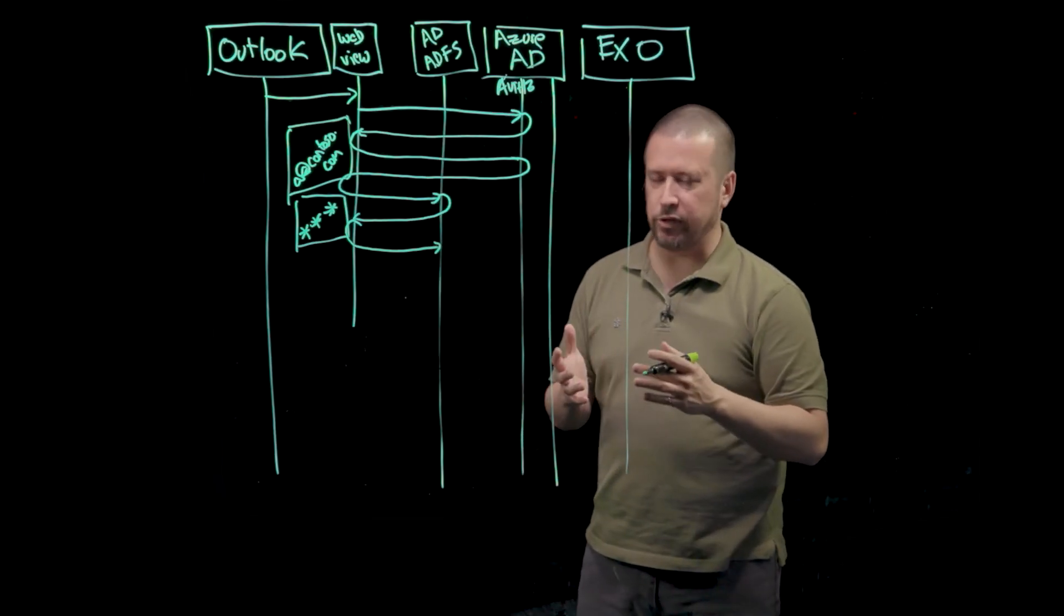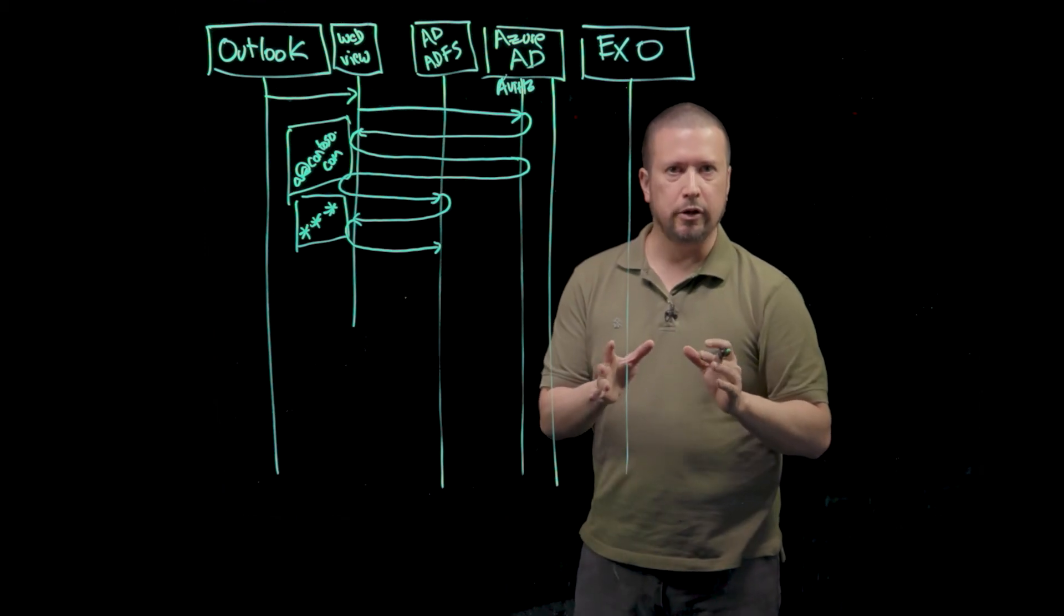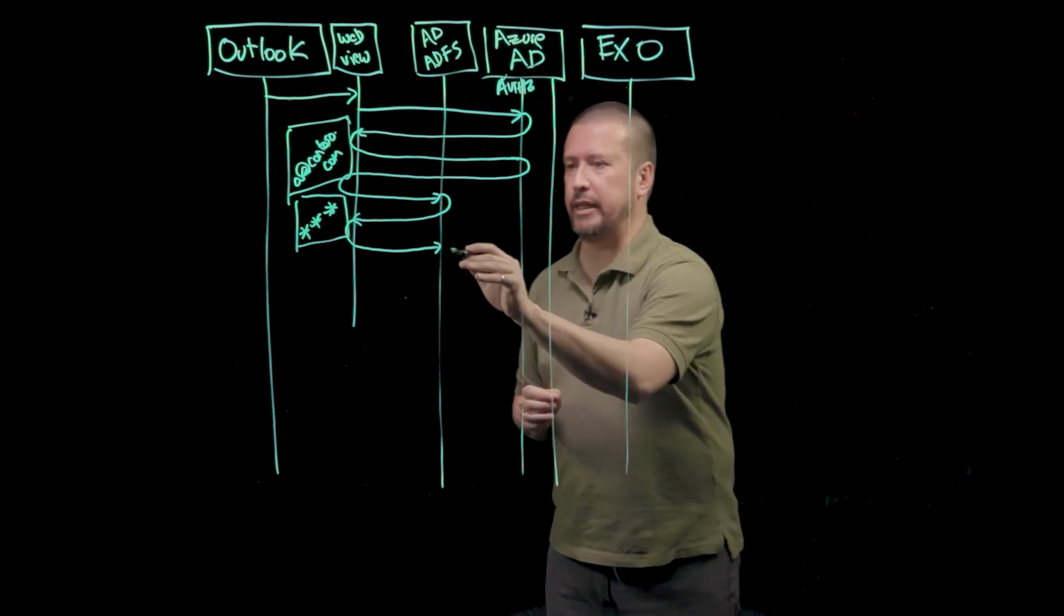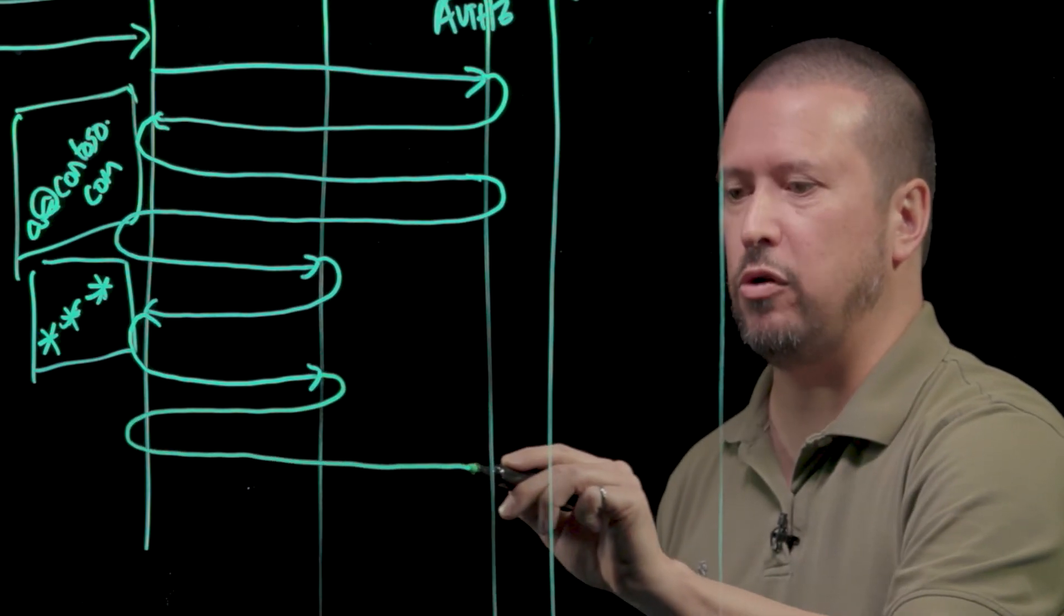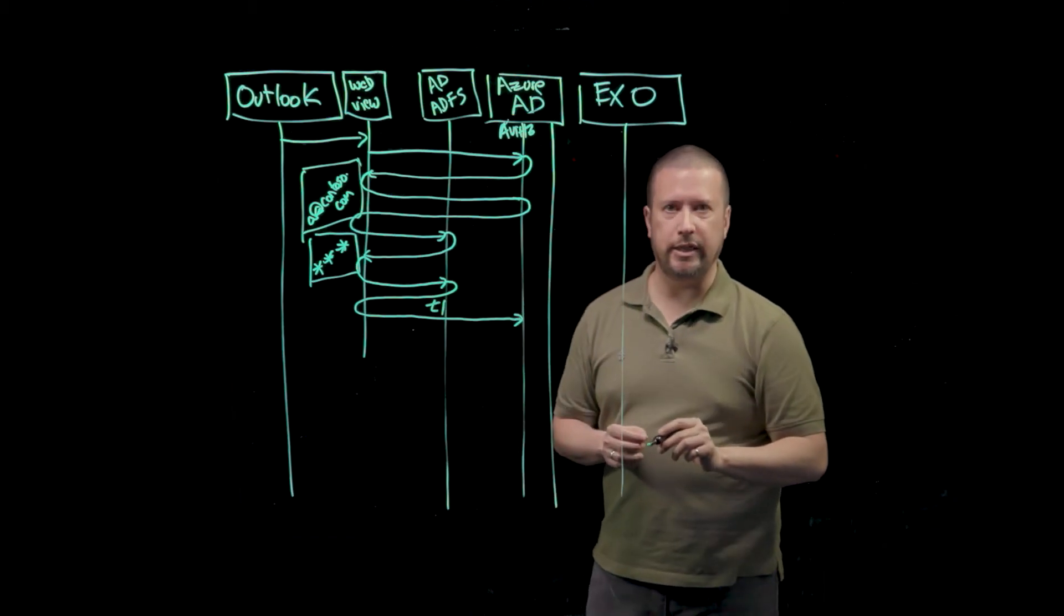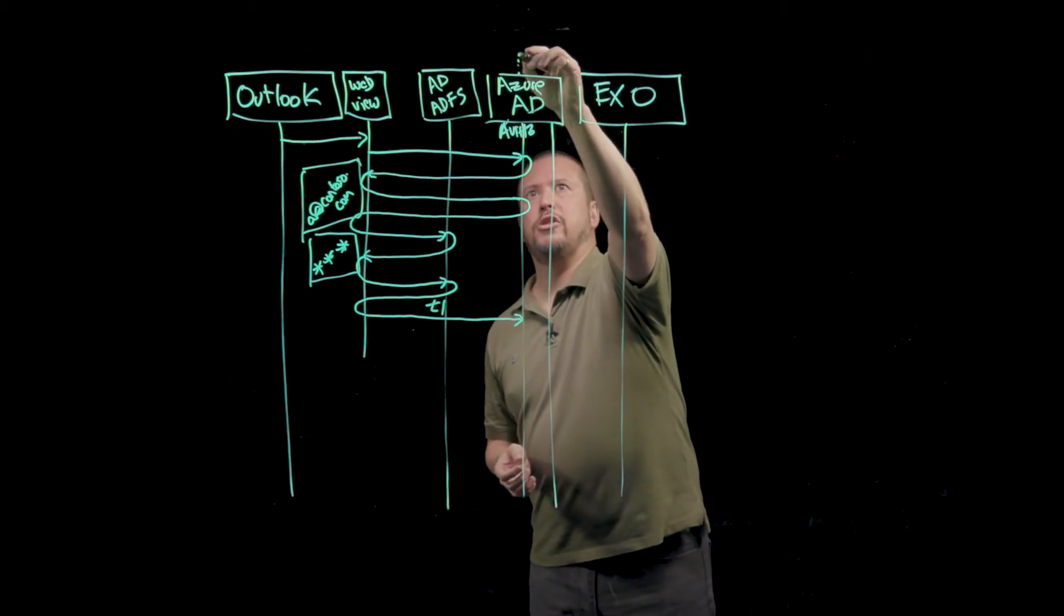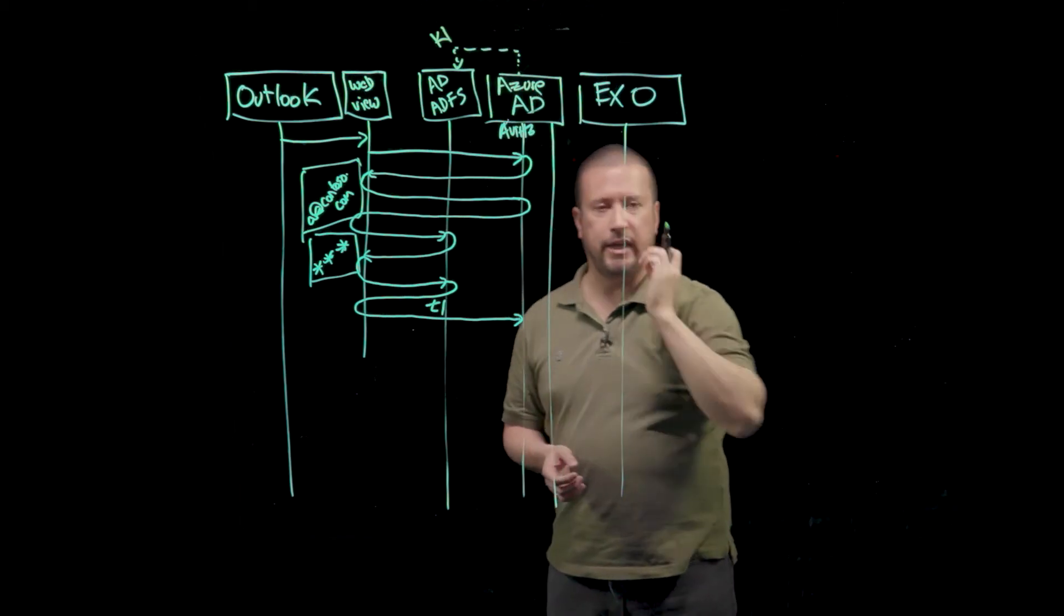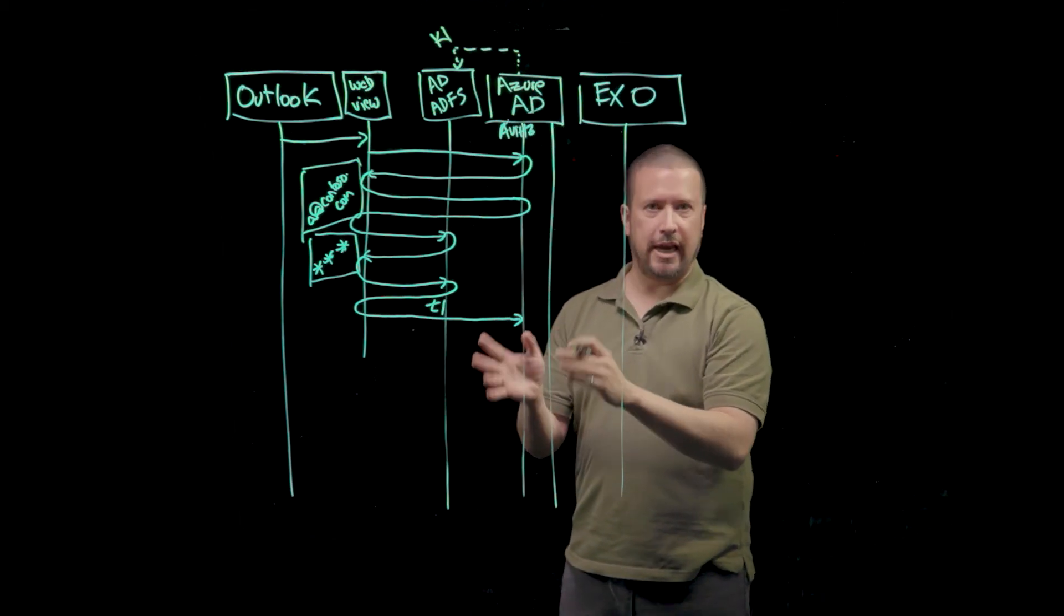The ADFS server says, yes, this really is Alice. It's okay to sign her in. And it responds to that authentication request that came from Azure AD. And, again, this is usually a post of a token, we'll call it T1, back to Azure AD that represents Alice's identity. Because Azure AD has a trust relationship and knows the sign-in key of ADFS, it can validate the signature on the token and know that this is Alice.